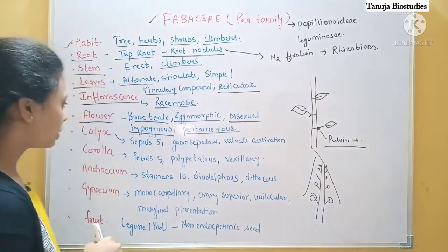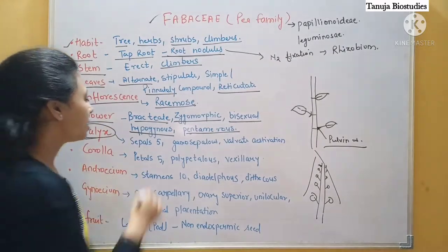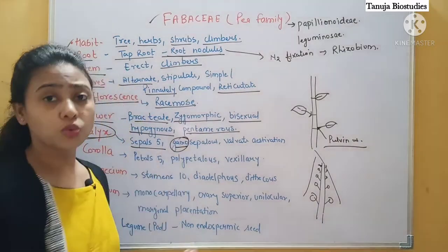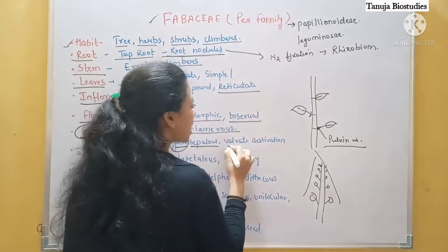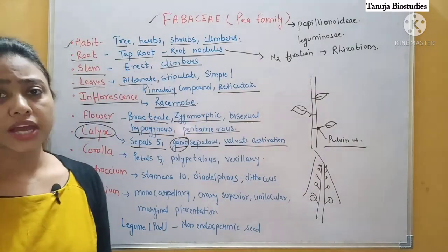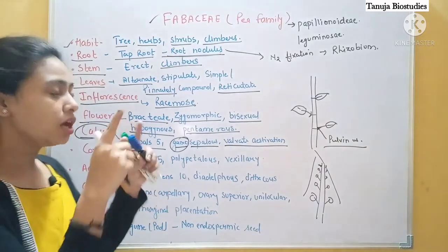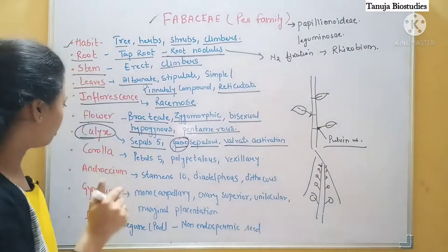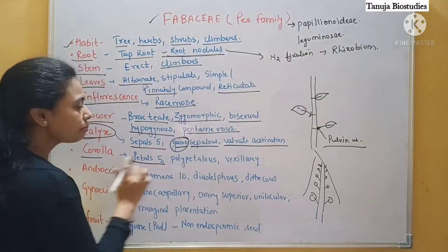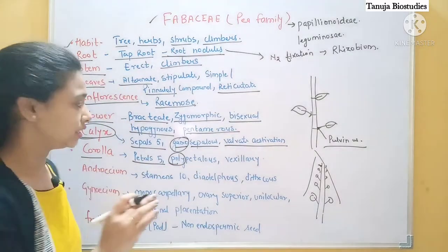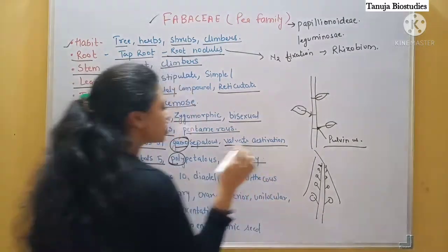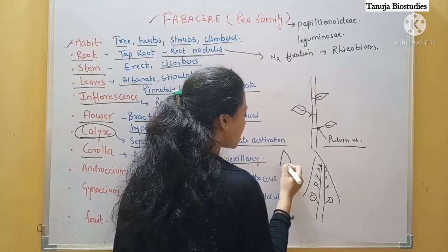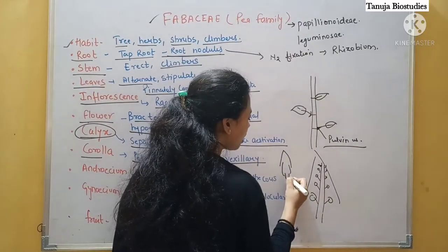For the calyx, there are five sepals and they are gamosepalous — that is, they are fused or united. The aestivation is valvate. The corolla has five petals but they are polypetalous — not jointed. The aestivation of the corolla is vexillary aestivation.